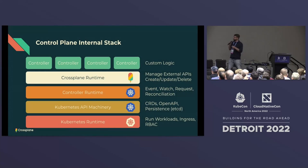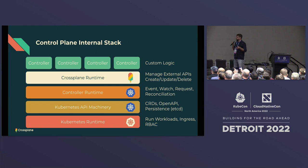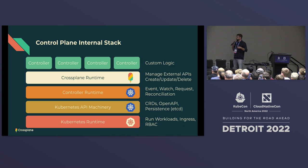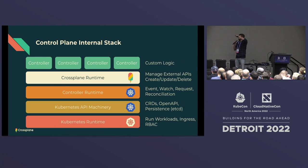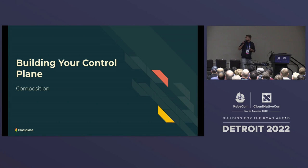The tech stack builds on the Kubernetes runtime and API machinery. On top of that, the controller runtime accelerates how we build controllers in Crossplane, giving us nice functionality for implementing reconciliation of cloud provider resources. Above that, we've built an opinionated Crossplane-specific runtime that further accelerates implementation of controllers for managed resources. The top layer contains all the controllers — for RDS, DynamoDB, GKE, and whatever other resources — each built on this stack.